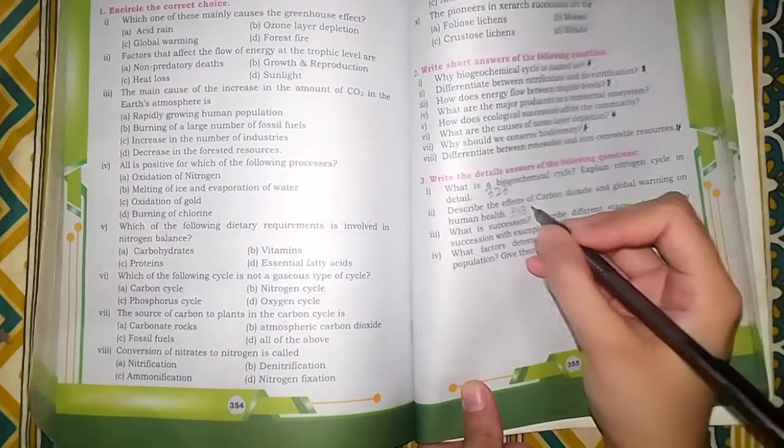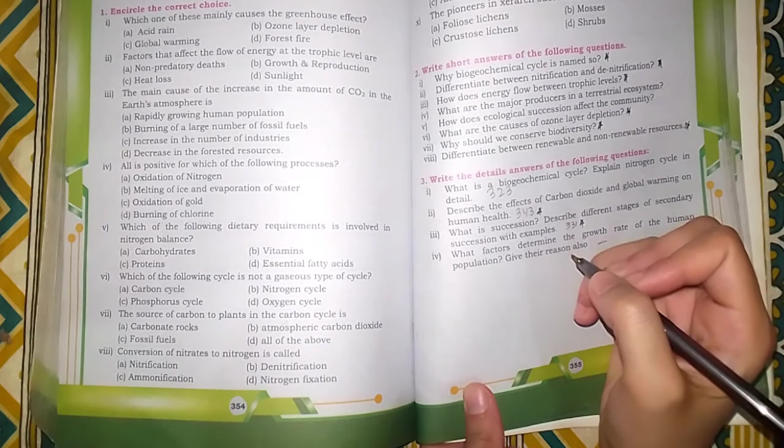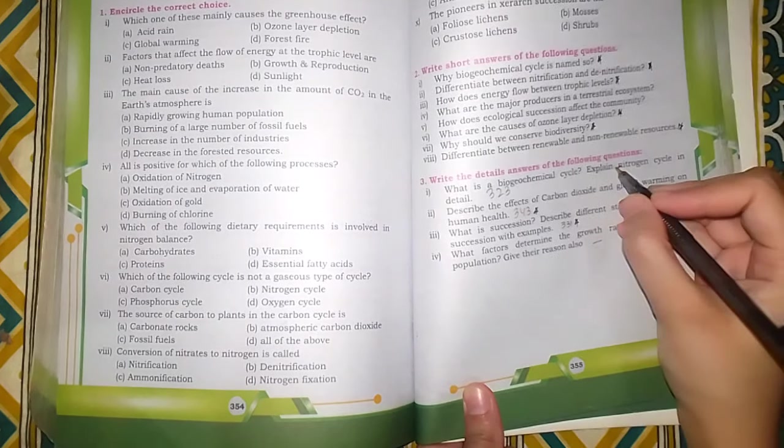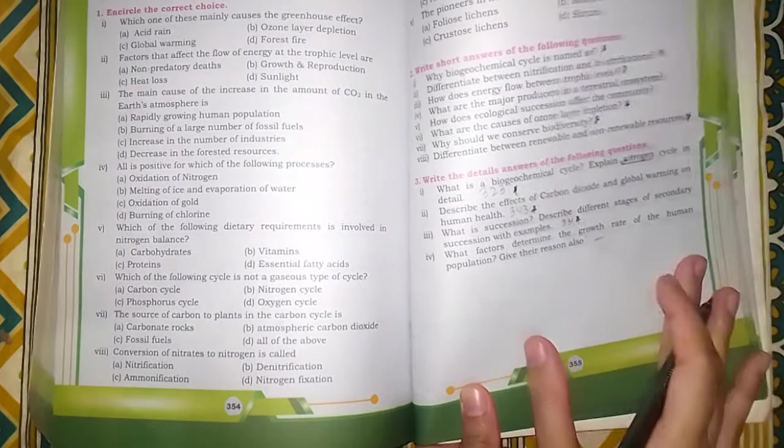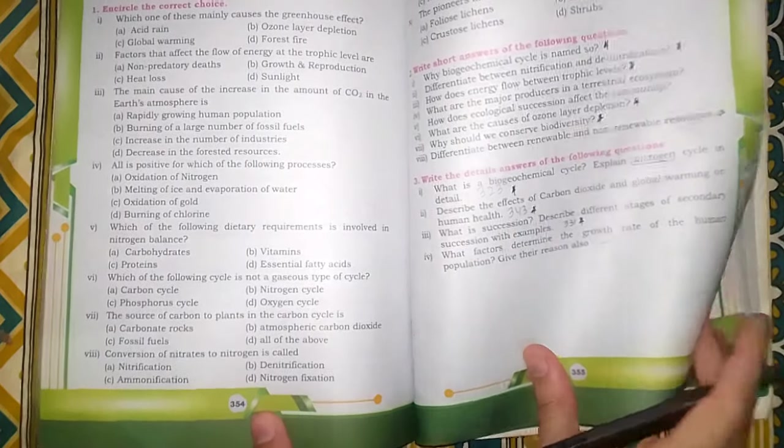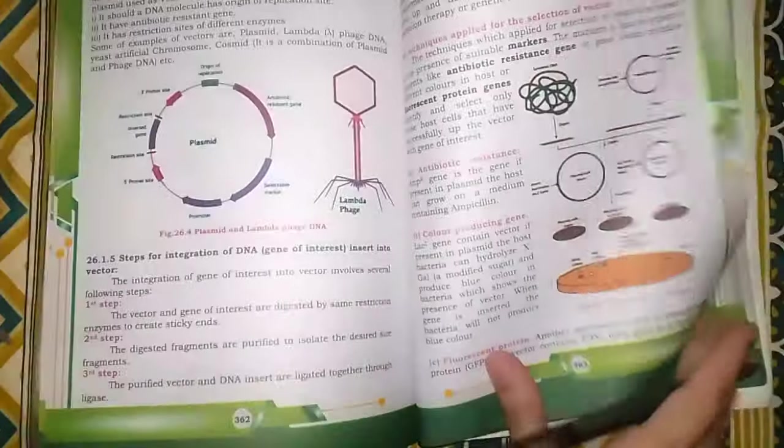There are 4 long questions. You have to do succession, global warming on human health, and nitrogen cycle. These are questions that you have to prepare. I think there are most important questions for your board exam 2024.